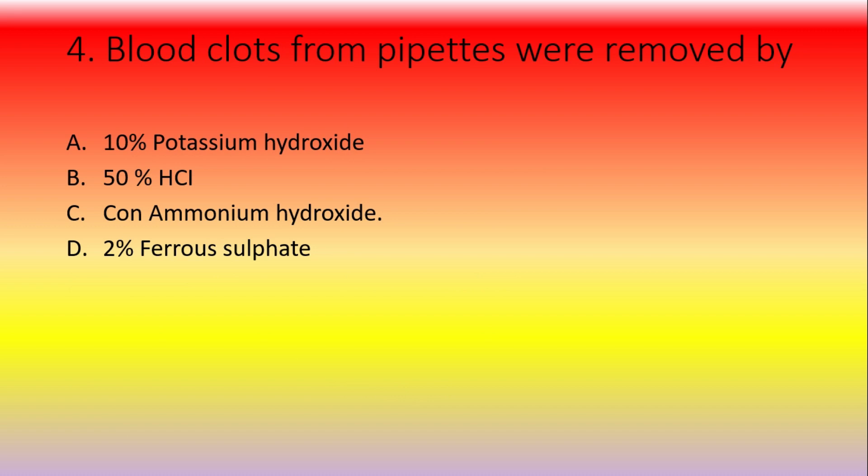Degree of interference by other methods is the parameter known as specificity. Blood clots from pipettes are removed by — option A: 10% potassium hydroxide, option B: 50% HCl, option C: concentrated ammonium hydroxide.